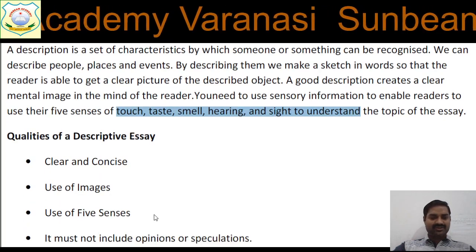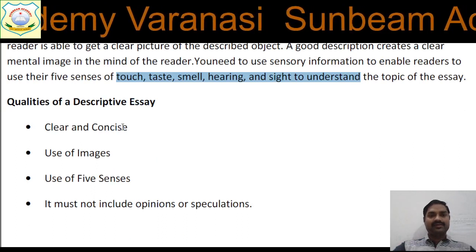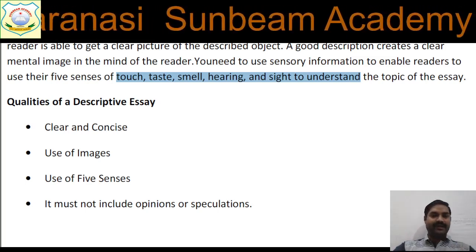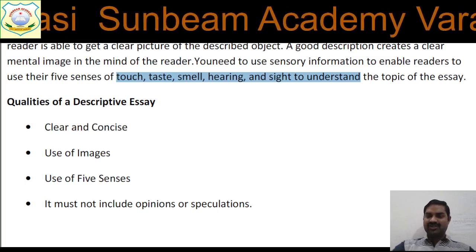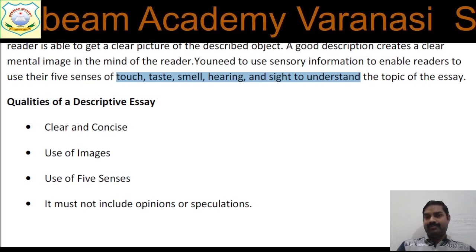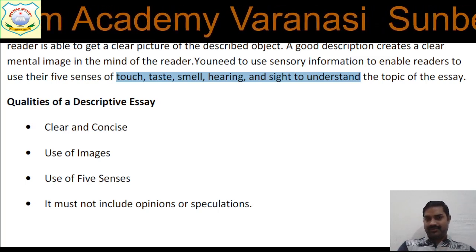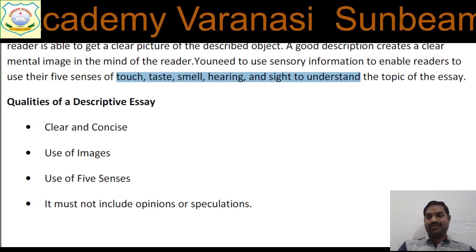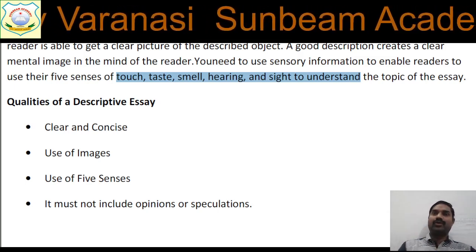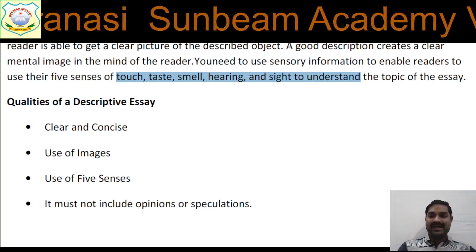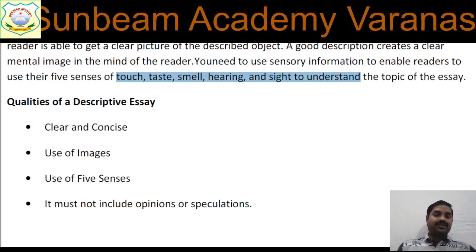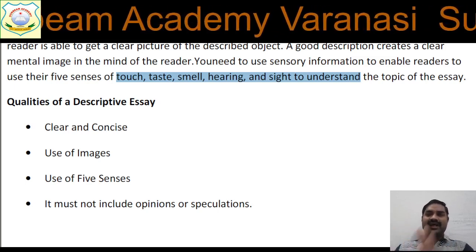These are the important things. Next: your descriptive writing must be clear and concise — these are the basic qualities of descriptive writing. There must also be use of images. 'Image' does not mean you are going to draw anything on the paper; it means you will describe something in a way that makes it appear as though something exists. For example, if you are writing a descriptive paragraph on a room, you will describe your bed, fan, AC, clock, calendars, table, and other objects — how they look. That will make it clear to people how things are arranged in the room.